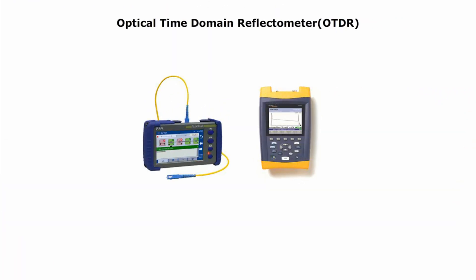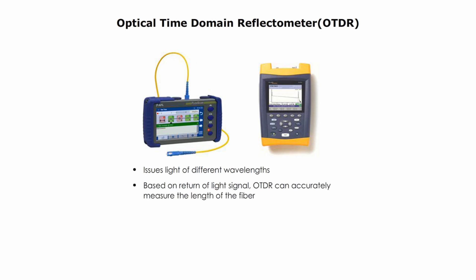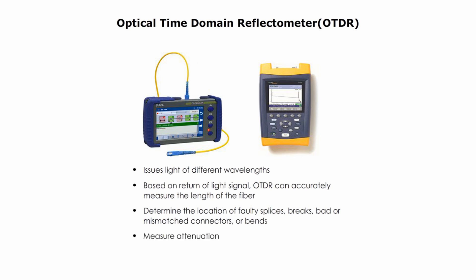OTDR is short for optical time-domain reflectometer. OTDR issues light of different wavelengths. Based on the return of the light signal, OTDR can measure the length of the fiber. It can also determine the location of splices, breaks, bad or mismatched connectors, or bends, and it can measure attenuation. OTDR is very expensive, and it can cost easily from $4,000 to $30,000.